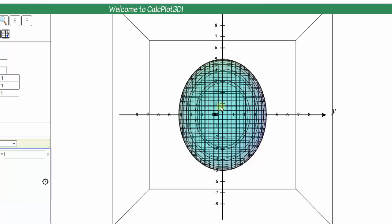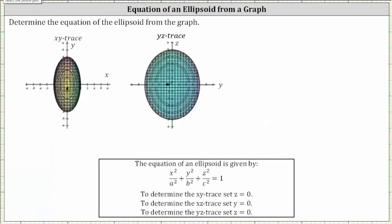Let's use this information to build the equation for the ellipsoid. Looking at the x-y trace, we have an ellipse where the axis along the x-axis is four units, and therefore A is equal to two, since A is half the length of the axis. The axis along the y-axis is eight units, and therefore B, half the length of the axis, is four. This gives the equation for the ellipse in the x-y plane: x-squared divided by two-squared, plus y-squared divided by four-squared, equals one.